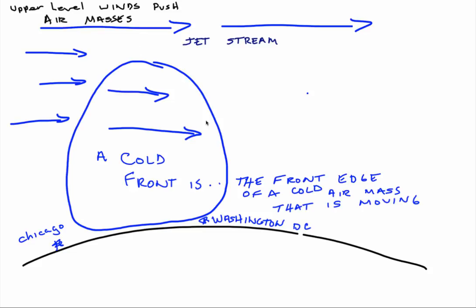In the same way, upper-level winds pull air masses along with them as they go, and the jet stream would be like the car. As the jet streams push into a region or steer air masses across the surface of the Earth, you have an air mass that moves, and the front edge of this air mass is what we would call a cold front because this is a cold air mass moving into a region. This helps you understand the terms we're beginning to use when talking about weather patterns and weather maps.